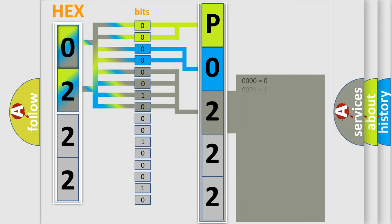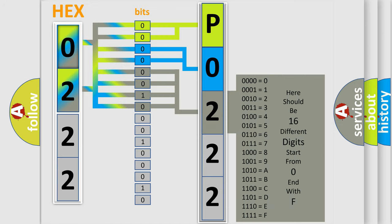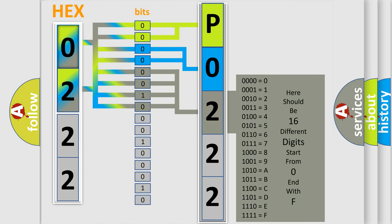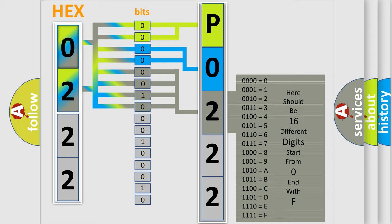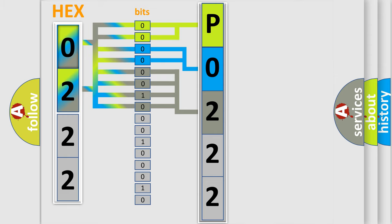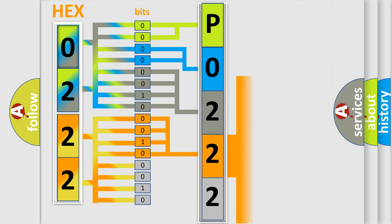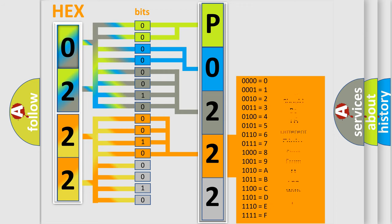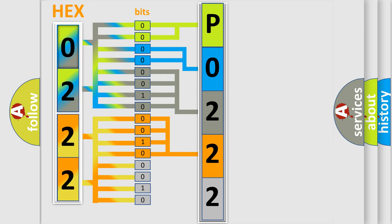The second byte is composed of a combination of eight bits. The first four bits determine the fourth character of the code, and the combination of the last four bits defines the fifth character. A single byte conceals 256 possible combinations.